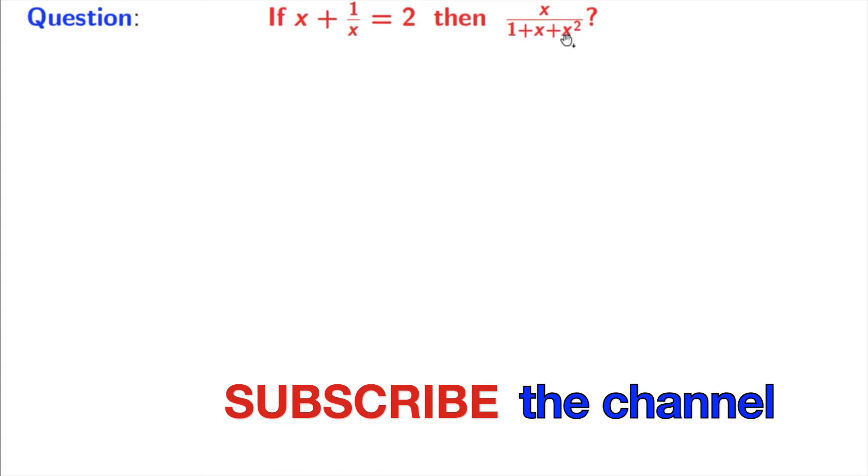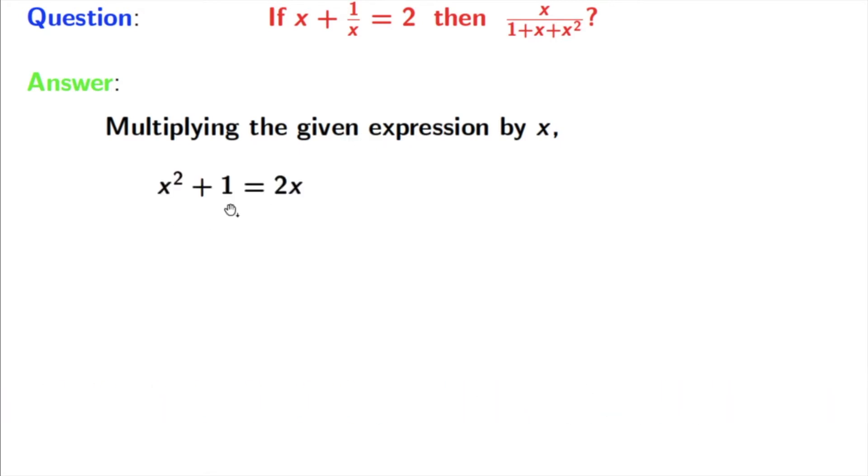So, let's move. We will at first multiply the given expression by x, and doing that we get x square plus 1 is equal to 2x.